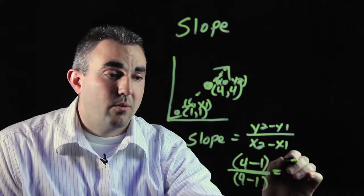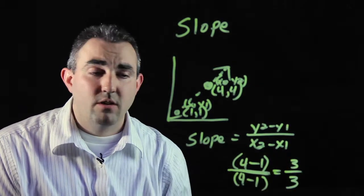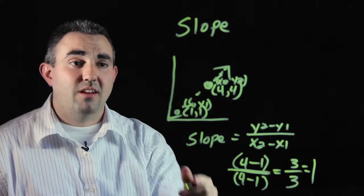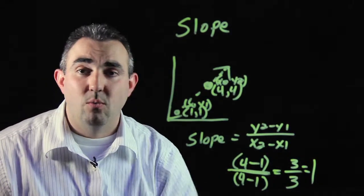Your calculator will do the math for you. 3 over 3, which is 1. The slope of this particular line graph is 1, or 1 over 1.